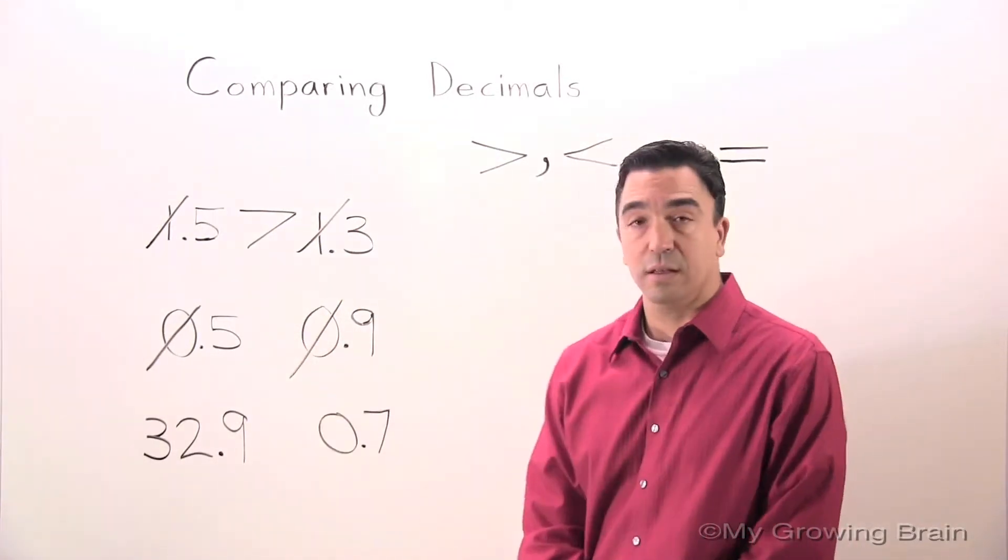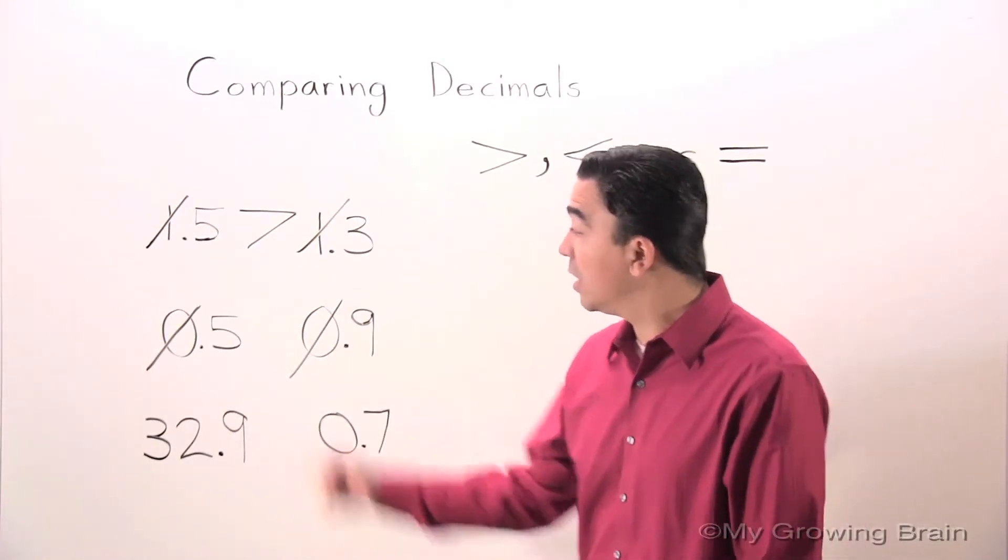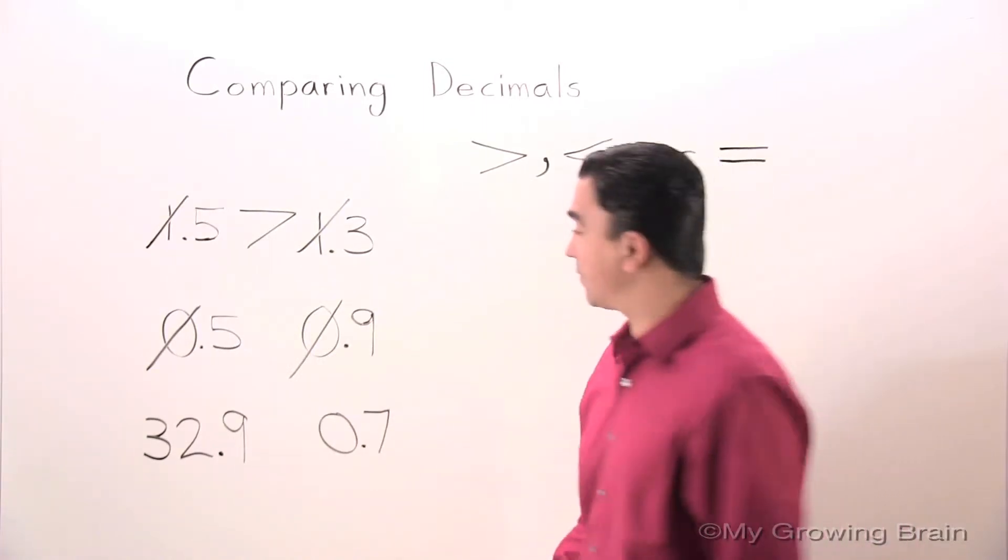Let's look in the tenths place. 5, 9. Well, we both know 9 is greater. Therefore, 5 tenths is less than 9 tenths.